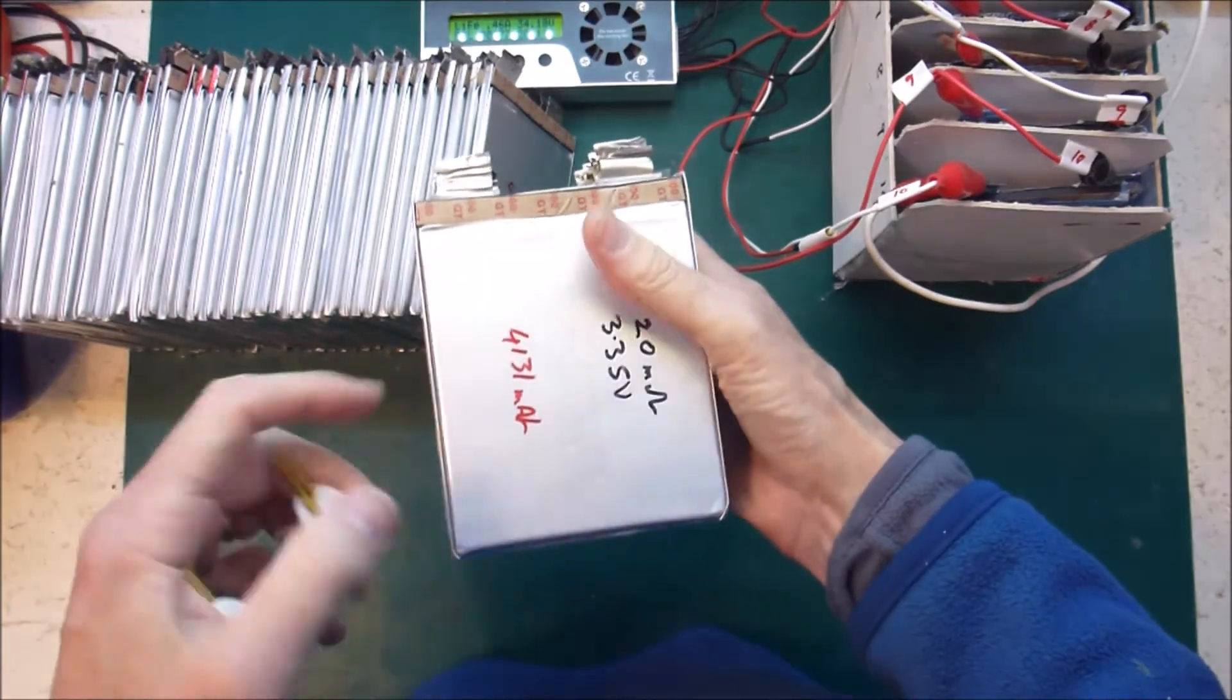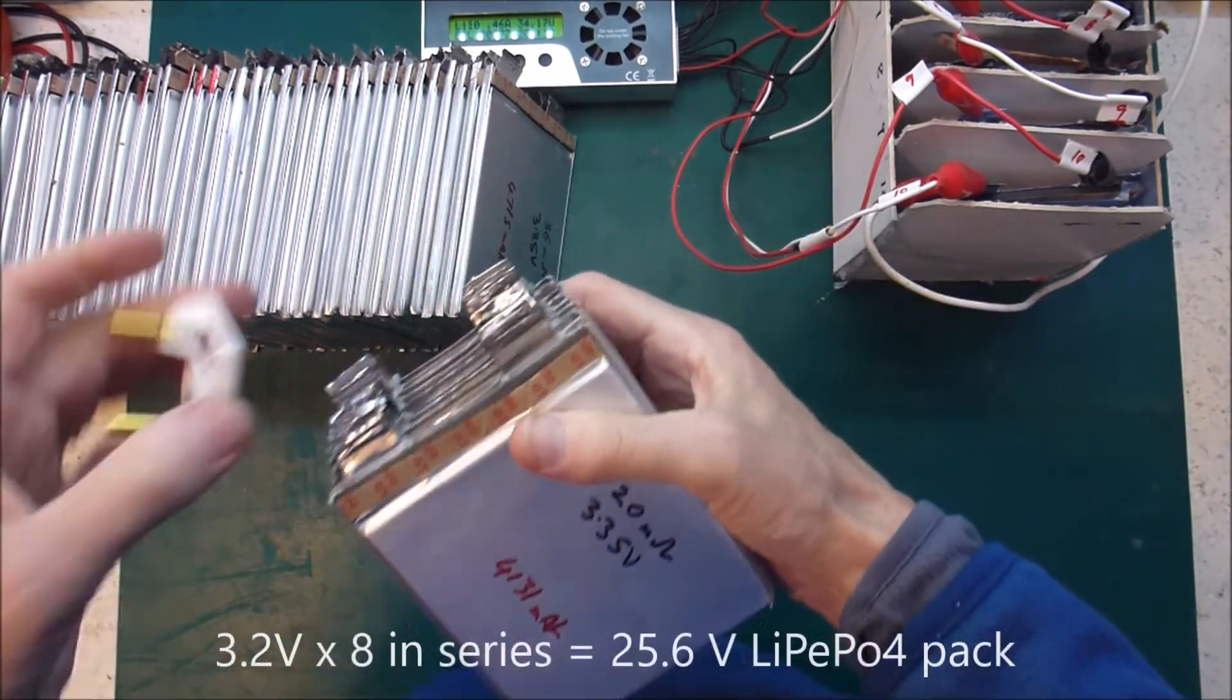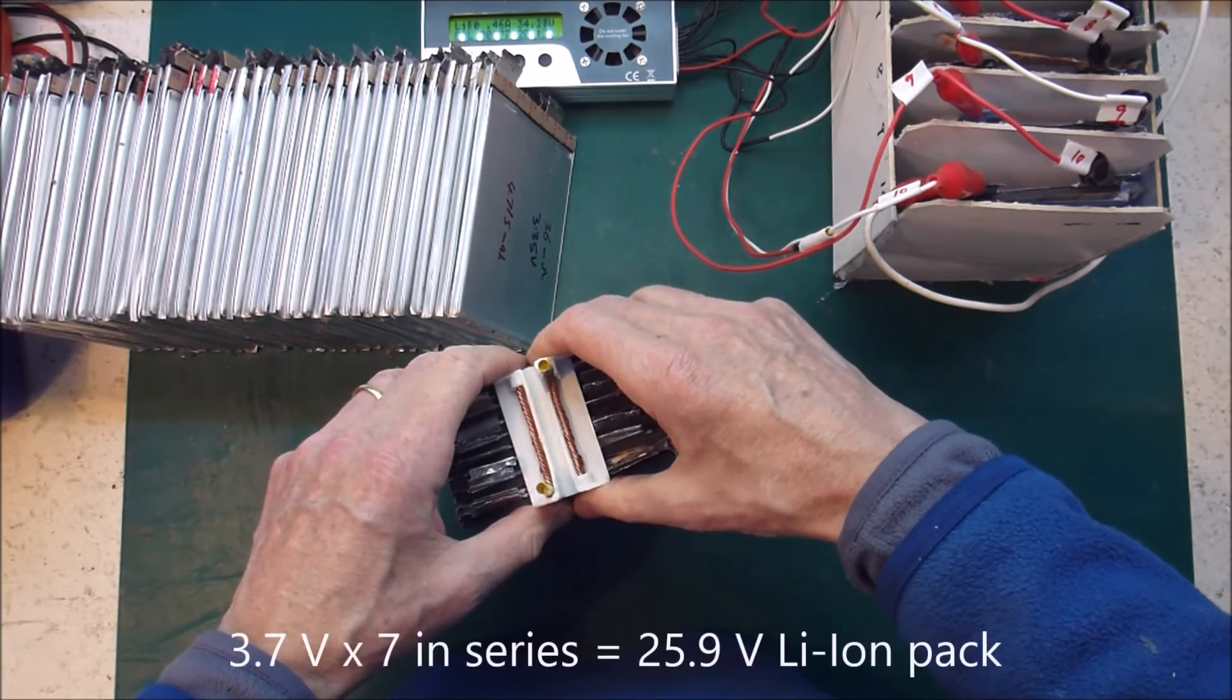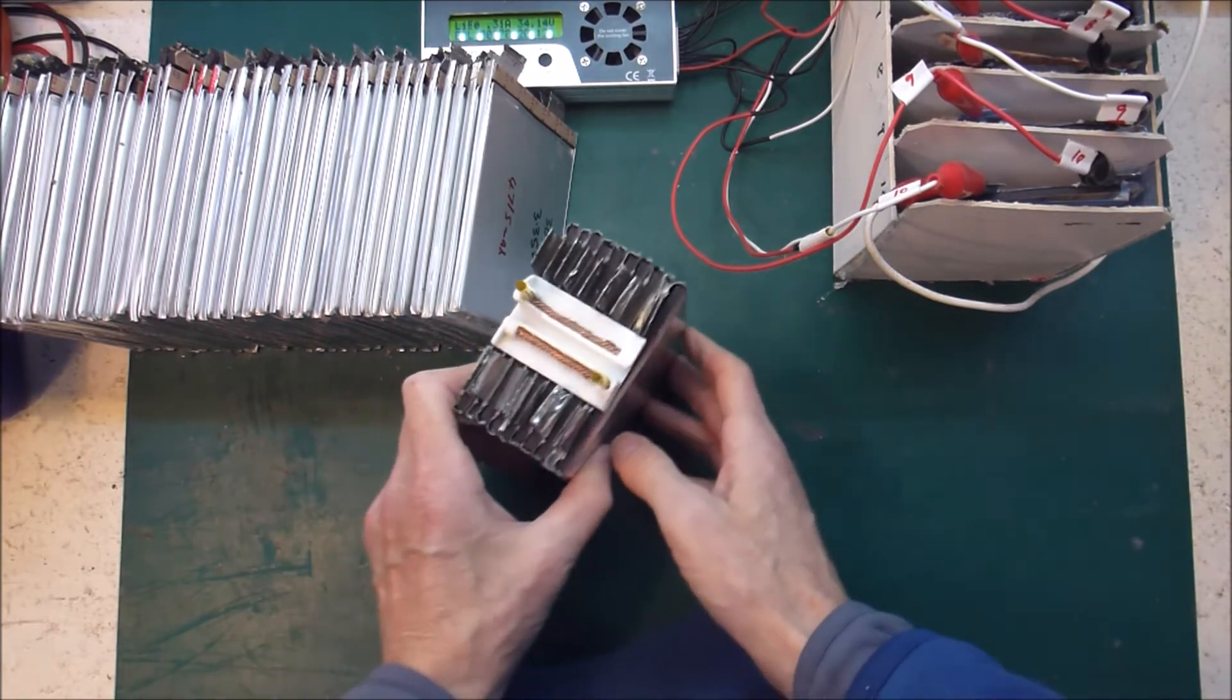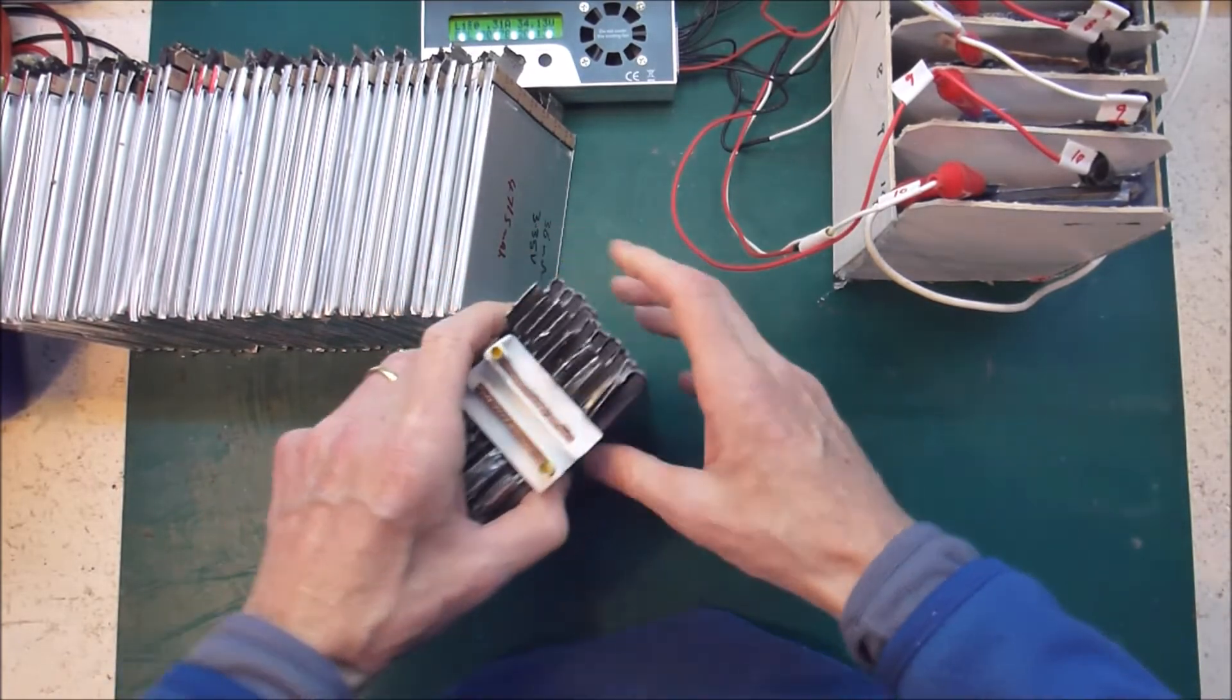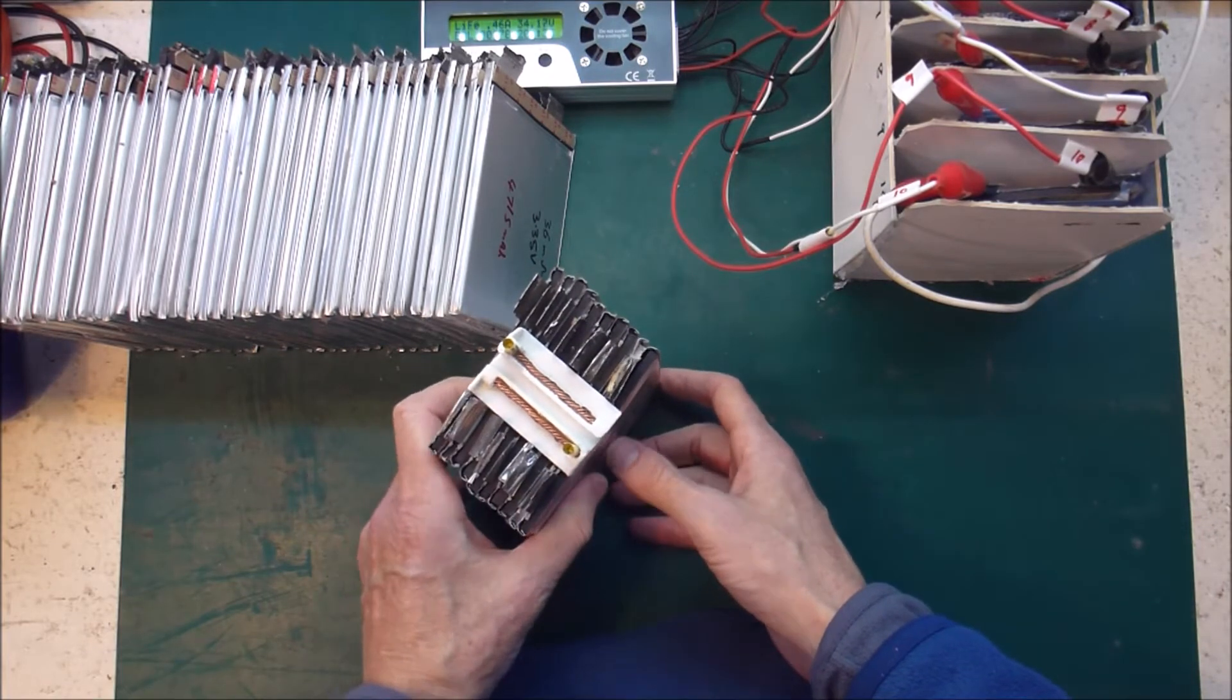If I string 8 of these together, 3.2 volts, then I end up at around the same voltage as my P7 lithium ion pack. So I should potentially be able to run this pack in parallel with my lithium ion 18650 packs.